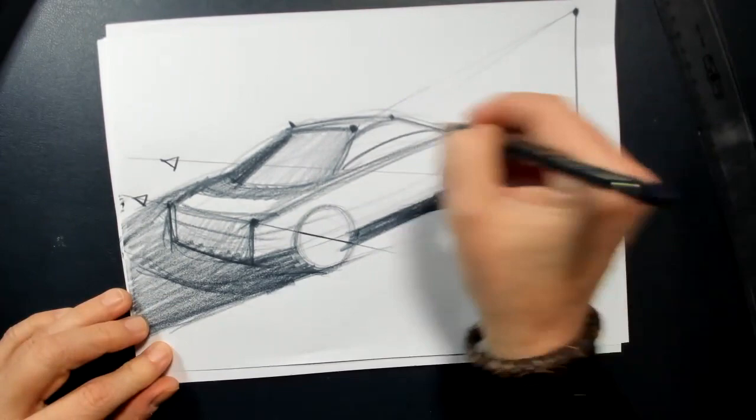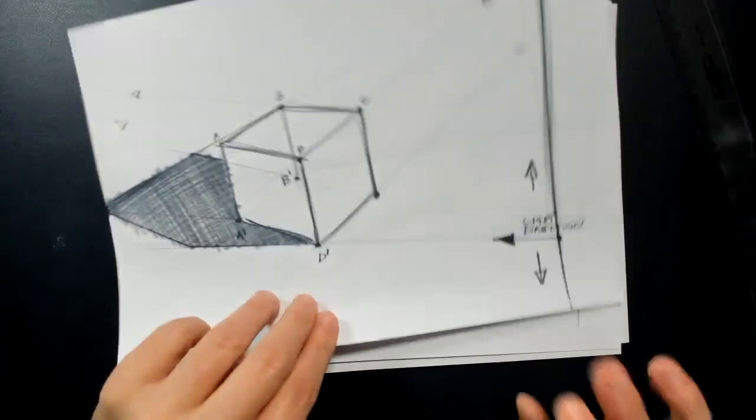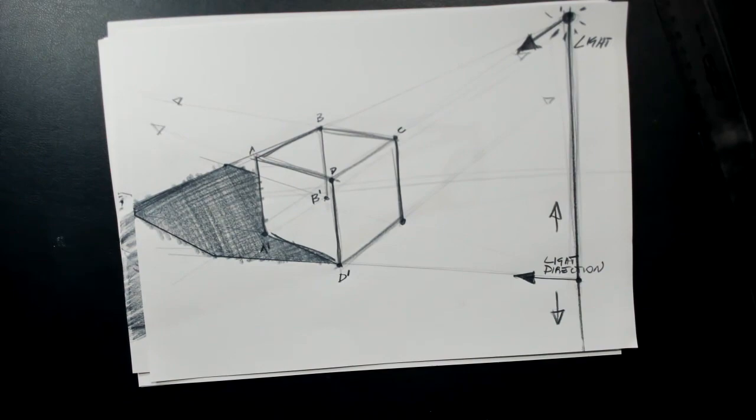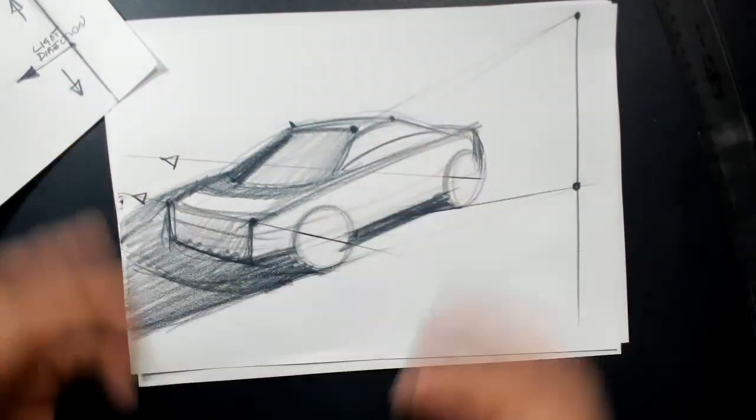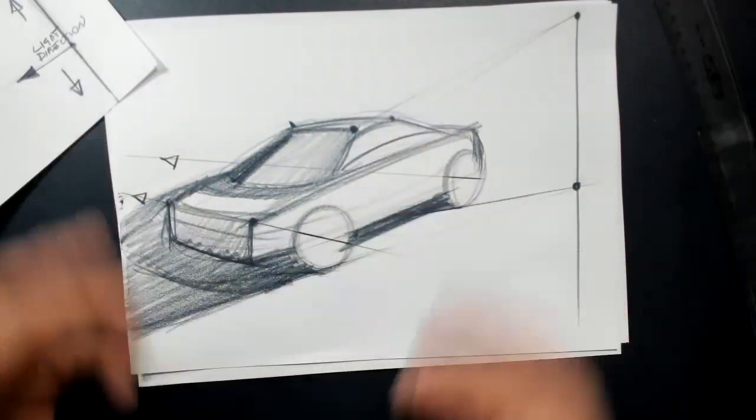All right, I hope that with this little sketch it's a little bit easier for you to understand how we place the cast shadow on solids and how we try to guess on a more complex shape like a car the cast shadow. Thank you.